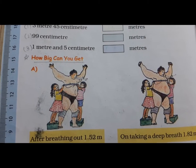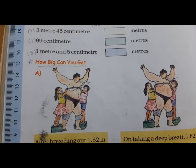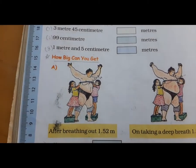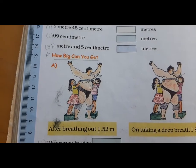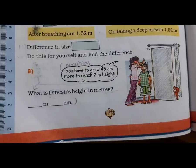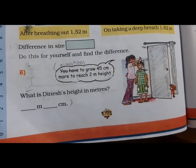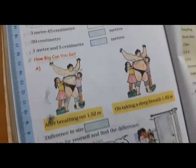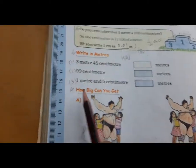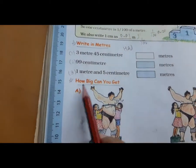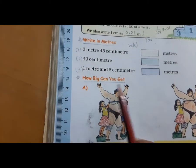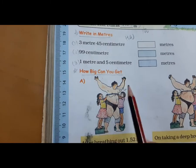Hello students, standard 5, subject maths, chapter 10, '10s and 100s'. Open your textbook to page number 142 and open your notebook. Write the heading: 'How Big Can You Get?' — this is the heading.